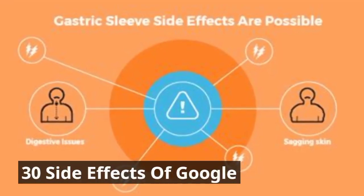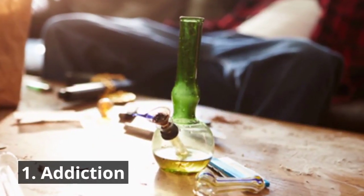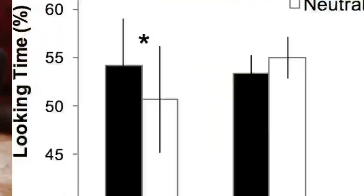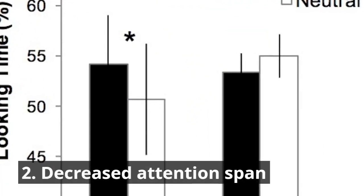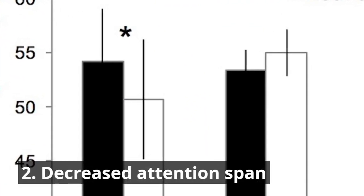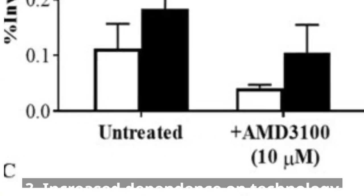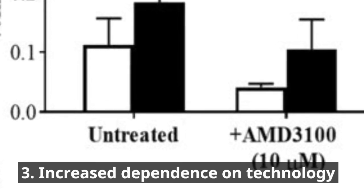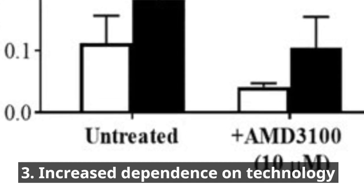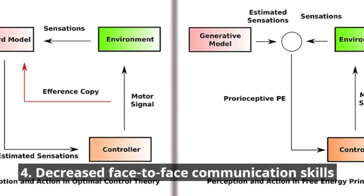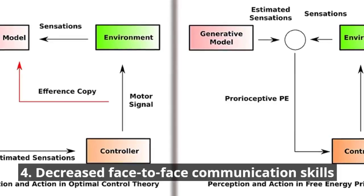30 Side Effects of Google. 1. Addiction. 2. Decreased Attention Span. 3. Increased Dependence on Technology.